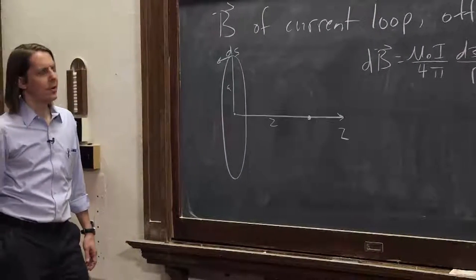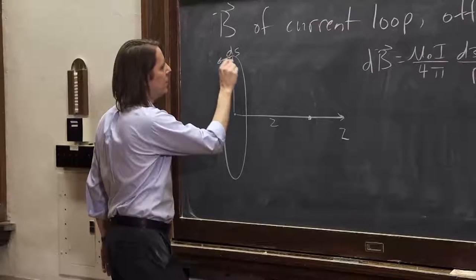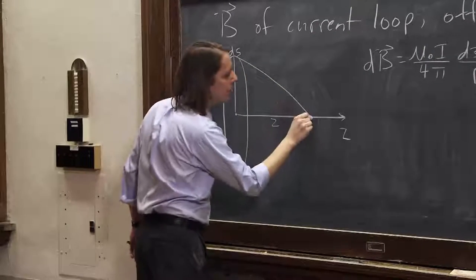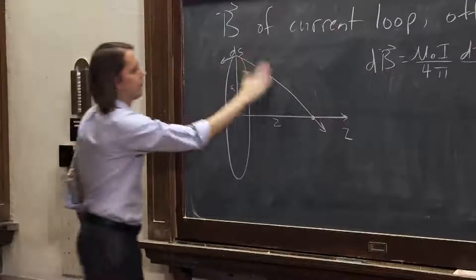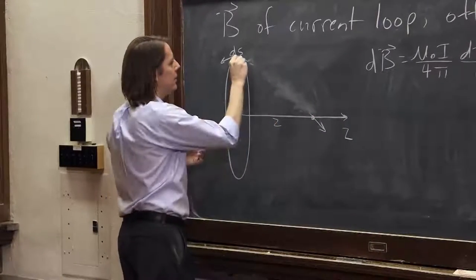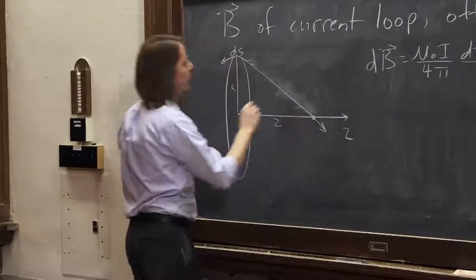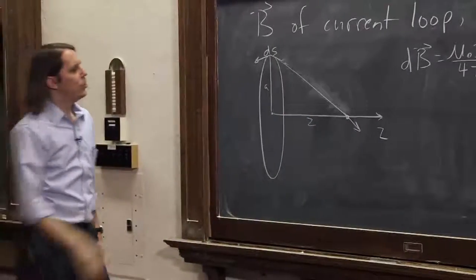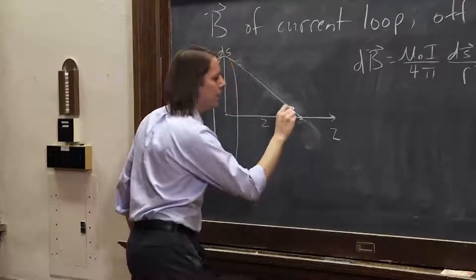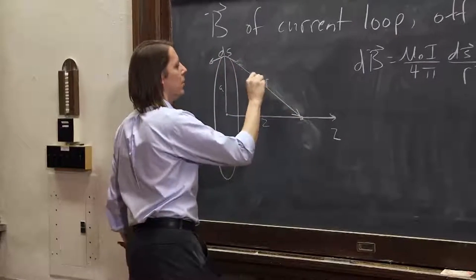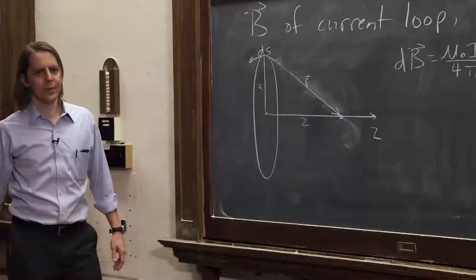And now our r vector is from dS this position to there. Except the line should be straight. This is horrible. dS to Z. Ooh, that's perfect. Okay. Okay. So then here, here is r. All right. There's all of our vectors.